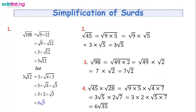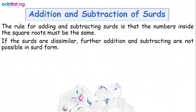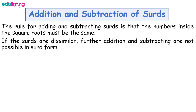Now we move to addition and subtraction of surds. The rule is that the numbers inside the roots must be the same. If the surds are dissimilar — not the same — then you cannot add or subtract them.